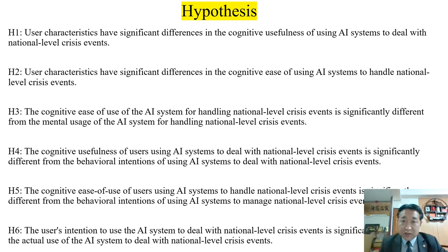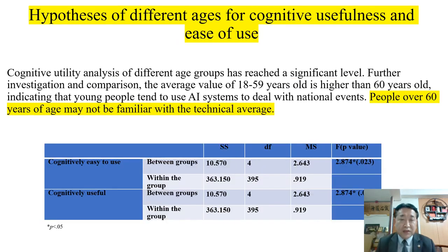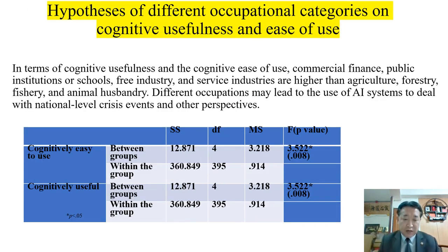Here are the details of the hypotheses. Regarding H3, people over 16 years of age may not be familiar with AI systems. Here is H3, a hypothesis of different occupational backgrounds. Different occupations may lead to different perspectives on the use of AI systems to deal with national level crisis events.